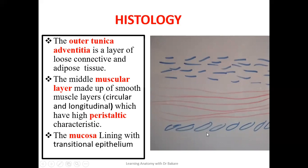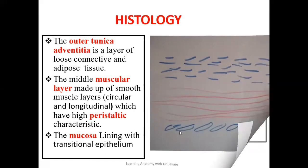If we check our previous lecture on epithelium, we will see how we described transitional epithelium. They do not have a specific presentation; they are continuously changing from one form to the other depending on what is contained within the structure. When the ureter is filled with urine, it takes a flat or squamous presentation. When it is empty, it takes the form of a cuboidal presentation. The quantity of urine contained within the ureter determines the type of epithelium lining the internal mucosa.